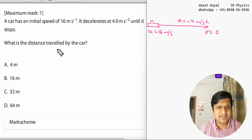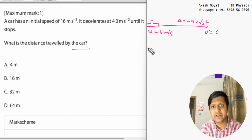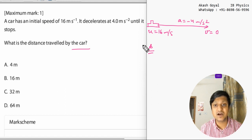So what is the distance travelled by the car? We have to find the value of s. So we will use the third equation which is v square equals to u square plus 2 a s.